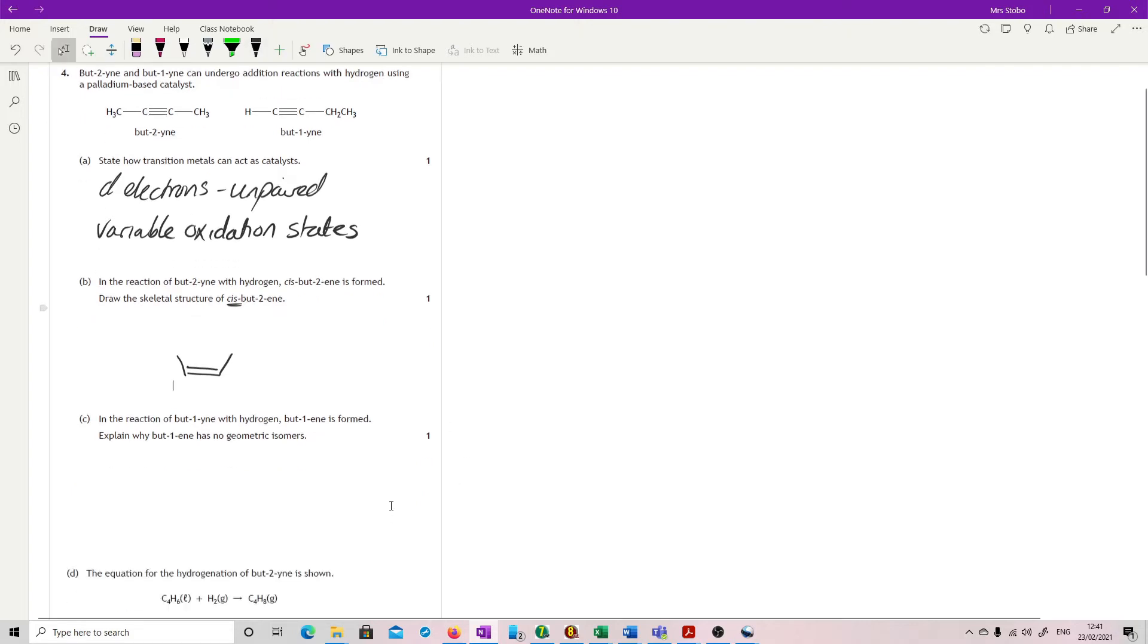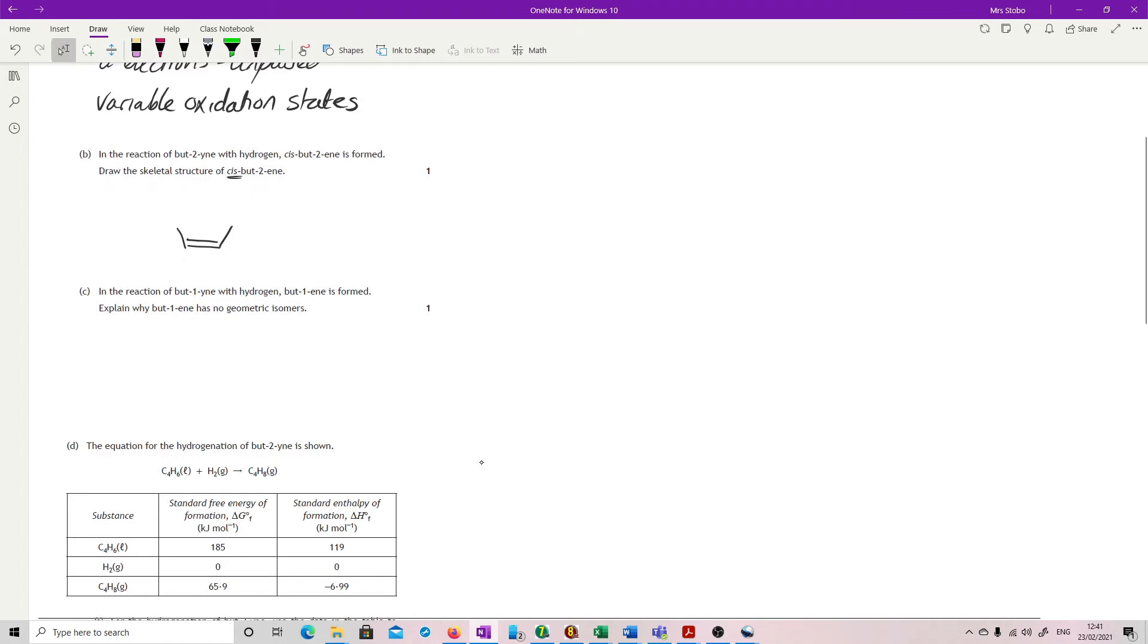In the reaction of bute-1-ine with hydrogen, bute-1-ene is formed. Explain why bute-1-ene has no geometric isomers. Well, here's your triple bond for bute-1-ine. Here is your double. Let me go to bute-1-ene. Here are my hydrogens and there's the problem. The hydrogens here are the same. You have the same functional groups here. So even if I swap these around, I still end up with exactly the same thing. So it's to do with these groups, these hydrogens, that there is no option of giving a different structural formula.